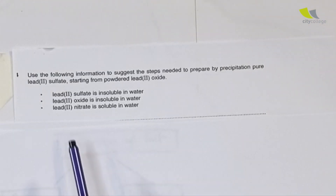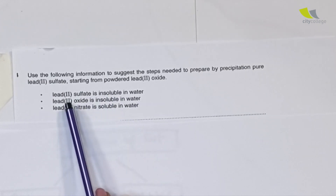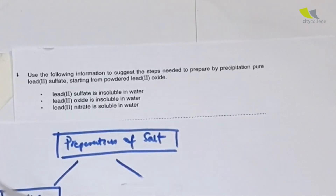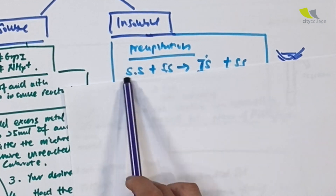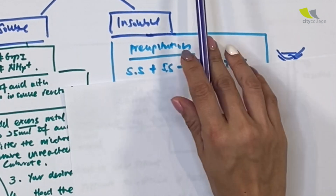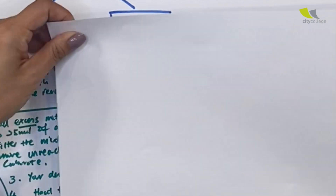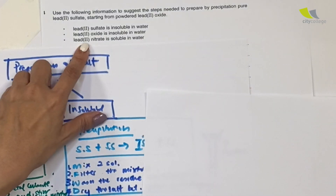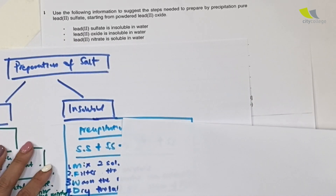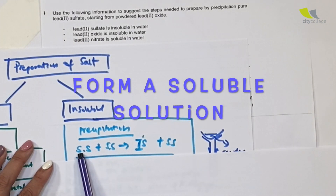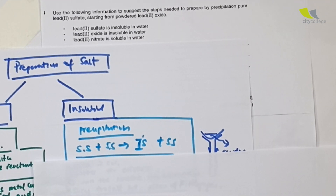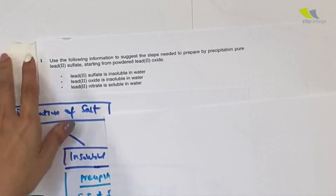They explain: lead sulfate is insoluble, lead oxide is insoluble, but lead nitrate is soluble. So in order for my precipitation to take place, I need to prepare a soluble solution. Since lead oxide is insoluble, I must first form lead nitrate — which is soluble — so that I have a soluble solution, plus another soluble solution, to give me an insoluble salt.